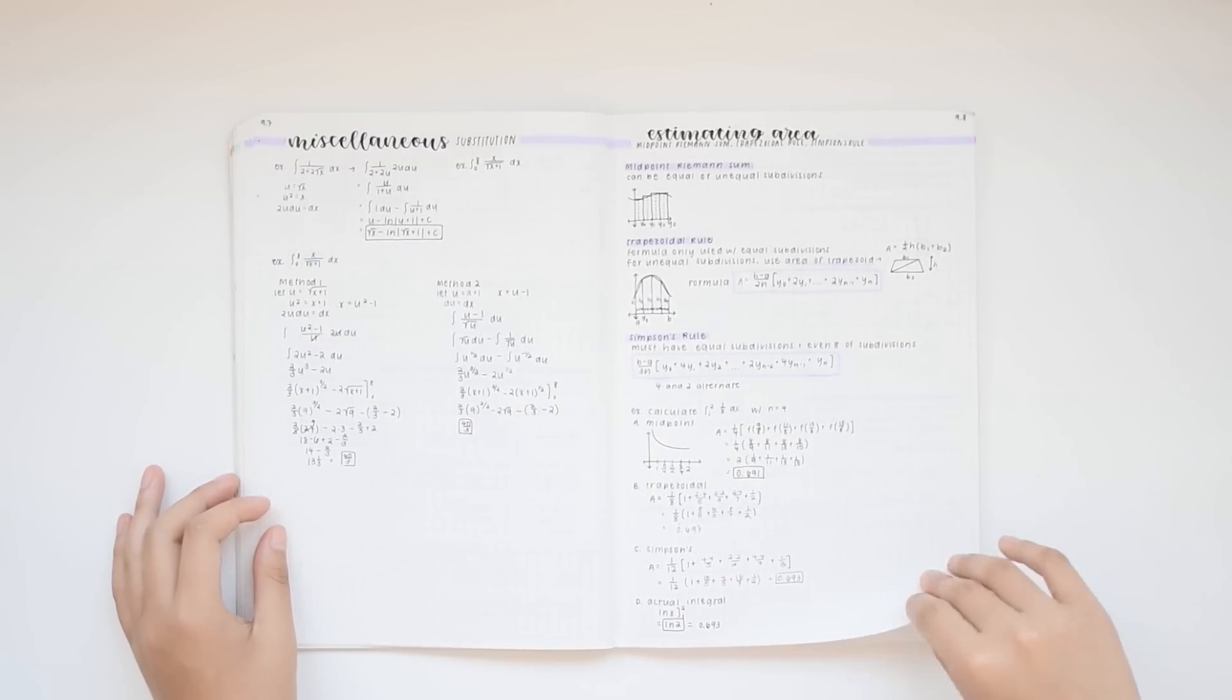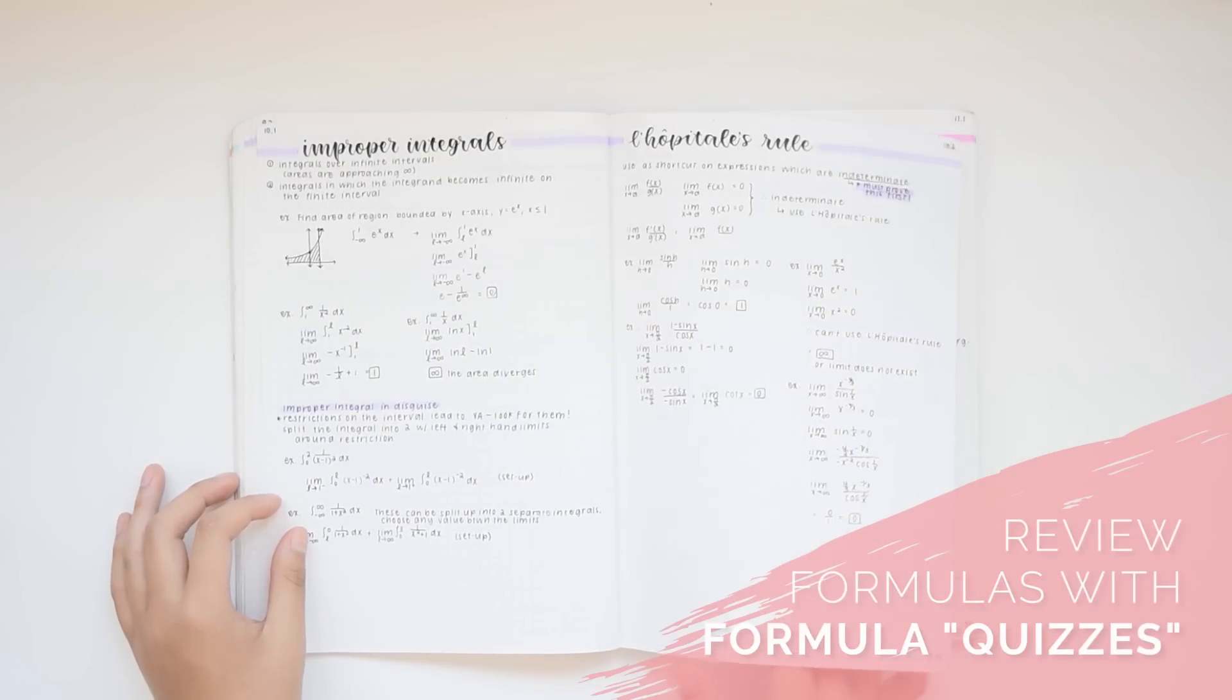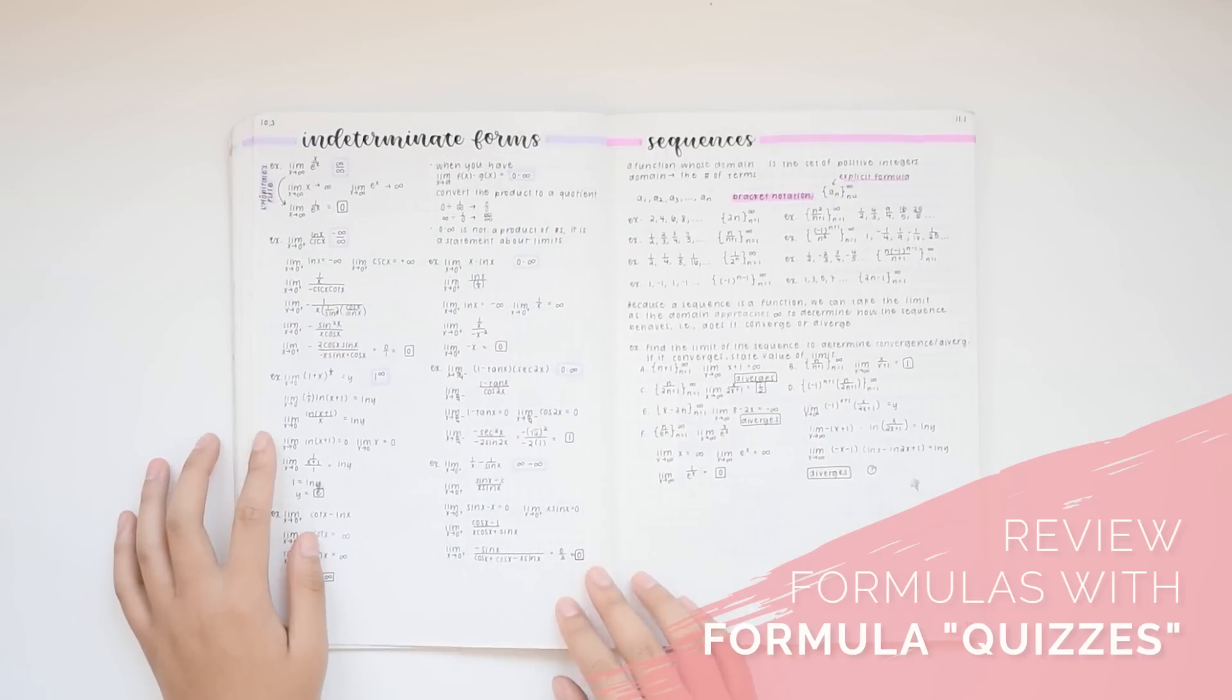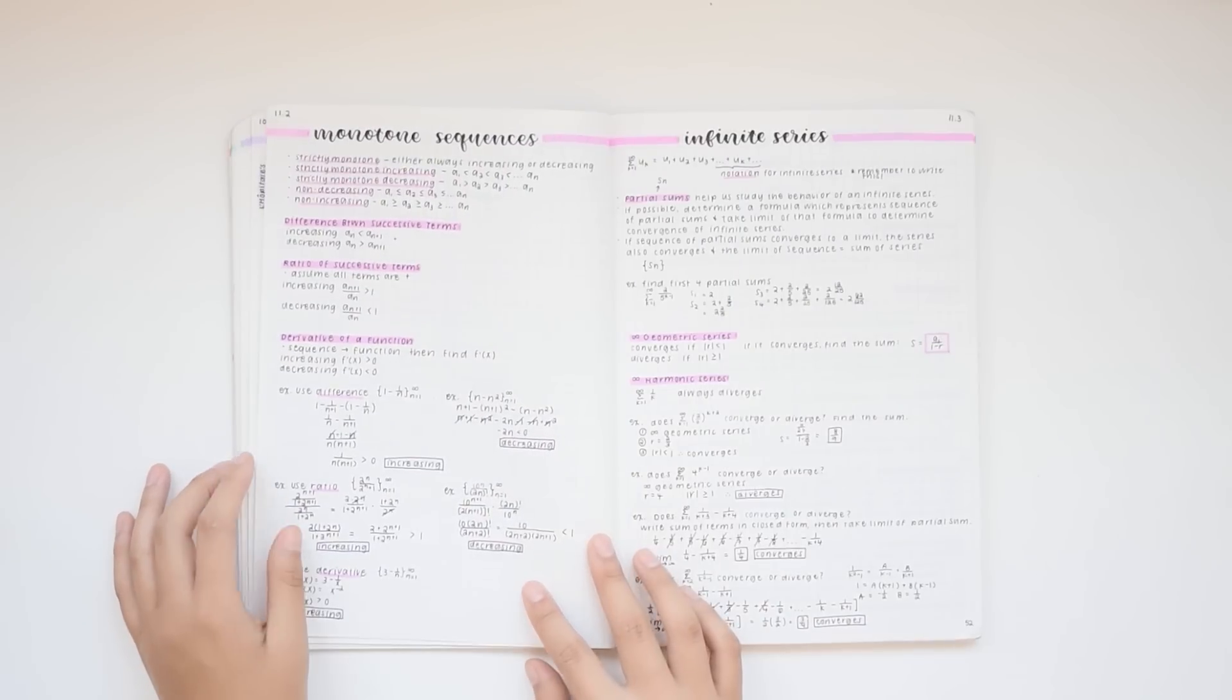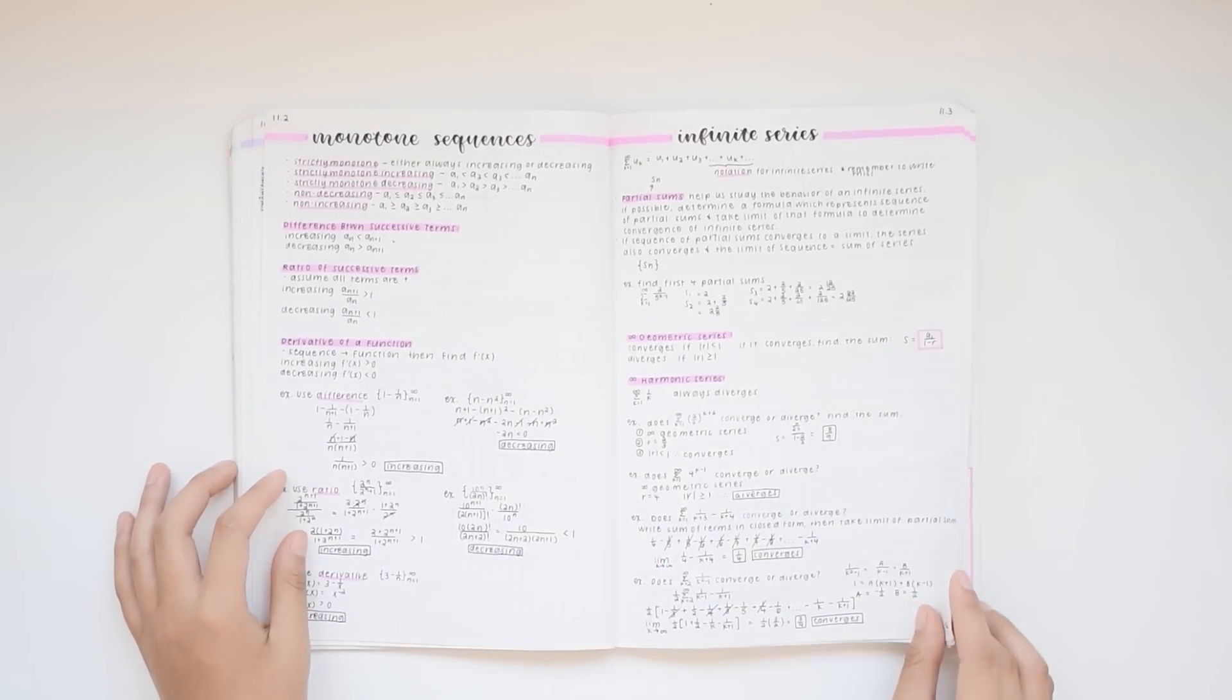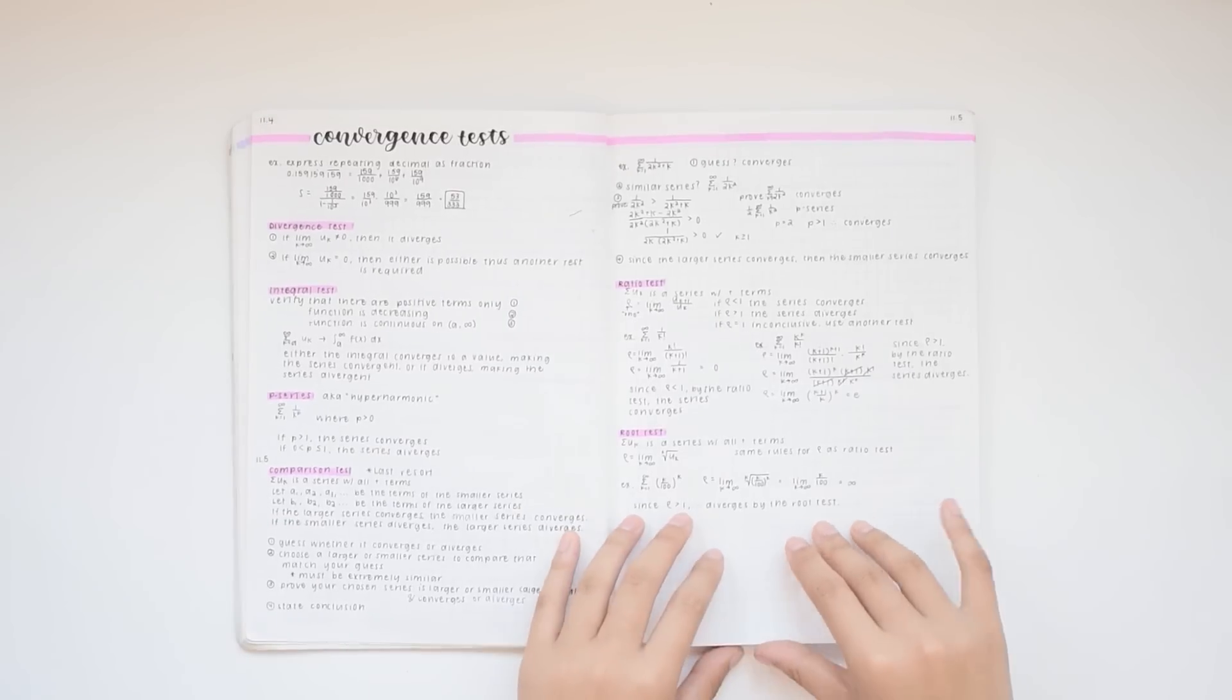One thing my teacher did that I found really helpful was formula quizzes where basically you had the name of a formula and you just had to copy it out. It helped review the formulas that weren't used as commonly to make sure we just remembered everything. So if your teacher doesn't do this, you can just set them up for yourself to help you memorize formulas.